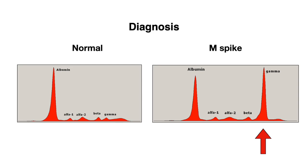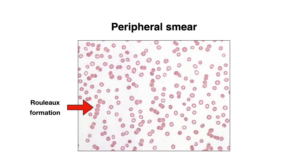Another finding to know about — one you may be asked about on exams — is Rouleau formation on peripheral smear, often described as stacking coins. The arrow points to one Rouleau formation, though there are several throughout the image. This occurs because there is a change in electrostatic forces between red blood cells due to an abnormal amount of protein in the blood; red blood cells carry a negative charge on their surface, which becomes reduced when there is an excess of protein.